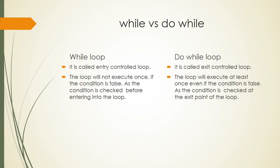Difference between while and do-while loop: while is an entry controlled loop; do-while is an exit control loop. In the while loop, the loop will not execute even once if the condition is false, as the condition is checked before entering the loop. In the do-while loop, the loop will execute at least once even if the condition is false, because the condition is checked at the exit point of the loop.